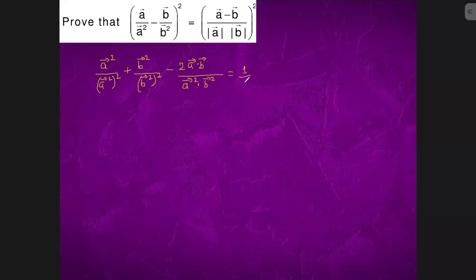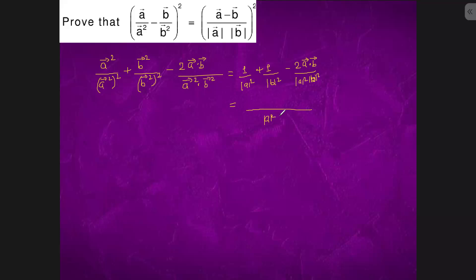We write 1 upon |a|² plus 1 upon |b|² minus 2(a·b) upon |a|²|b|². We take common denominator |a|²|b|², giving us |a|²|b|² minus 2(a vector dot b vector).